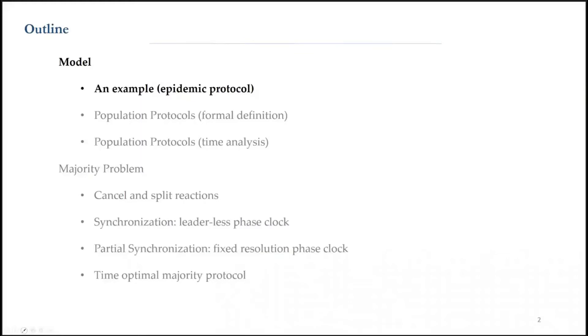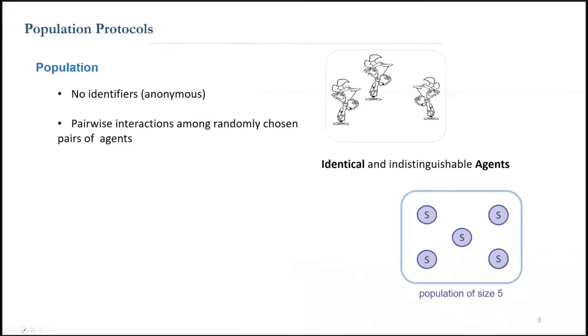Then I switch to talking about an exciting problem called the exact majority. There are two keywords here, population and protocol, and I will define both of them shortly.